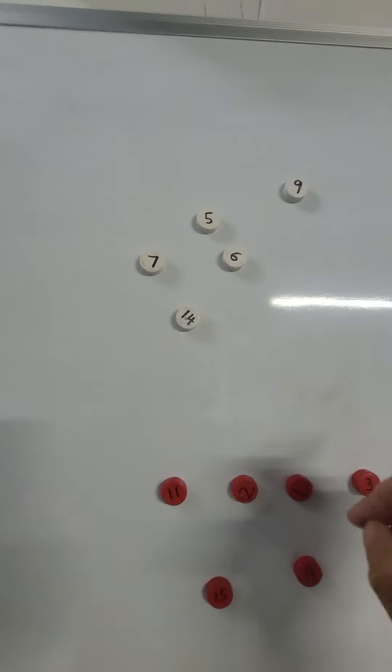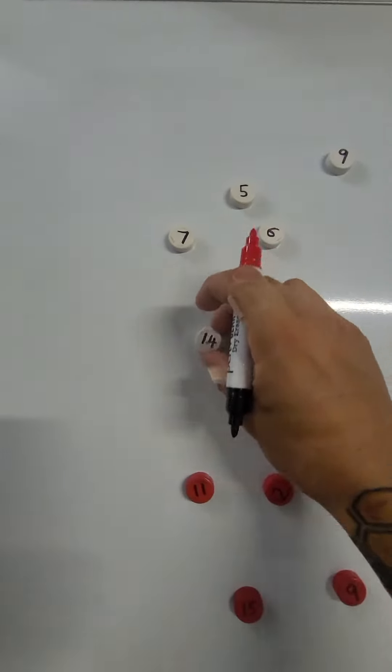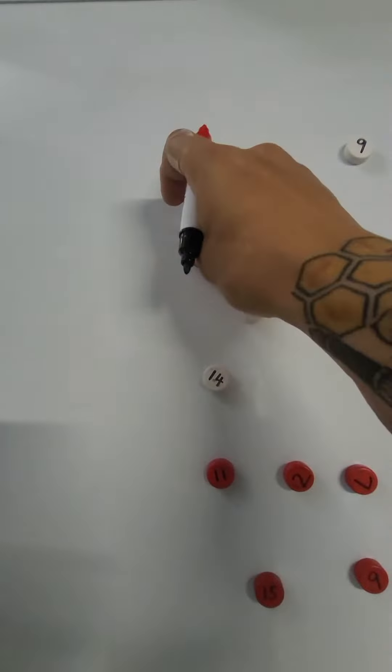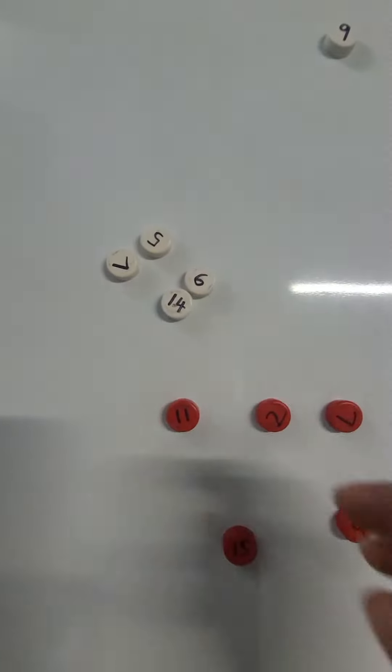So just to set this up, we have our winger who's being our ball carrier. He's got supporting players coming into ruck and a tackle is being made over here on the sideline. Let's say this is the sideline.